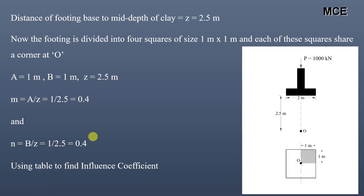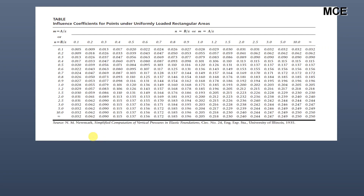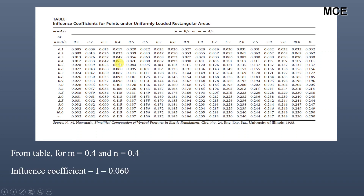We use the table to find the influence coefficient. The figure shows the table for influence coefficients for points under uniformly loaded rectangular areas, with values of m and n given in vertical and horizontal rows. For m = 0.4 and n = 0.4, we read from the table that the influence coefficient I = 0.060.